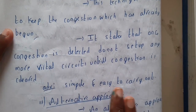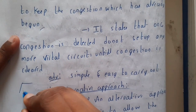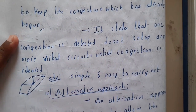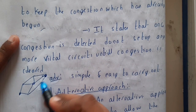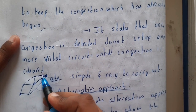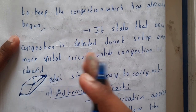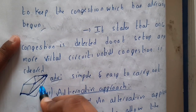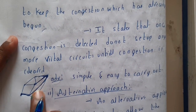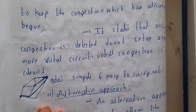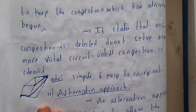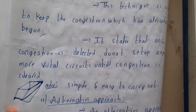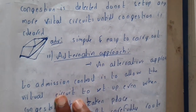Assume you are trying to transfer data from one point to another, but this path is congested and another path is also congested. So you stop adding more nodes until the congestion is fully cleared — that is, until the current data transfer is completely done. Do not add new connections, because if you do, there is a high chance everyone will start sending data and there will be a huge issue. That is the reason admission control is applied once congestion has occurred.